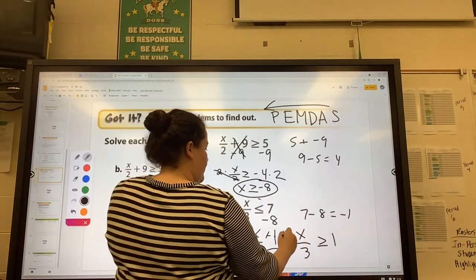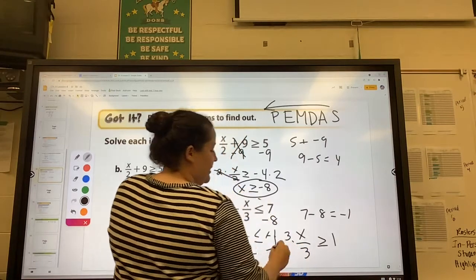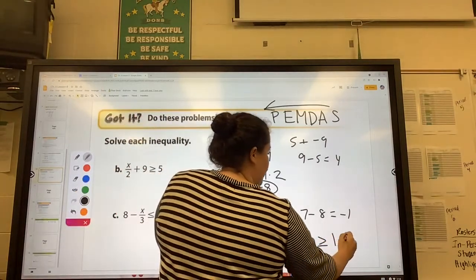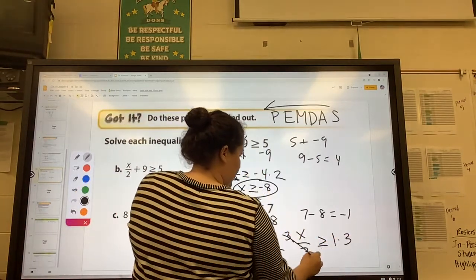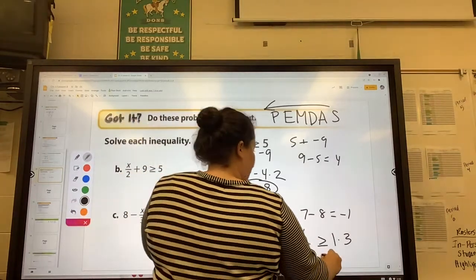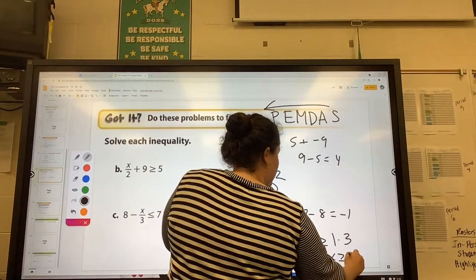And then to get rid of the negative—or not to get rid of the negative—get rid of the 3, we multiply both sides by 3. Those cancel. We're left with x. It's greater than or equal to 3.